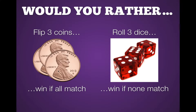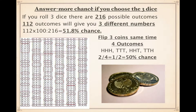Now the other homework question: 'Would you rather flip three coins and win if all match, or roll three dice and win if none match?' There's more chance if you choose the dice. Why? If you roll three dice, there are 216 possible outcomes. Of those, 112 outcomes would have all different numbers — for example, 2-3-1 or 2-4-1. That works out to 51.8 percent chance of getting all different numbers with three dice.